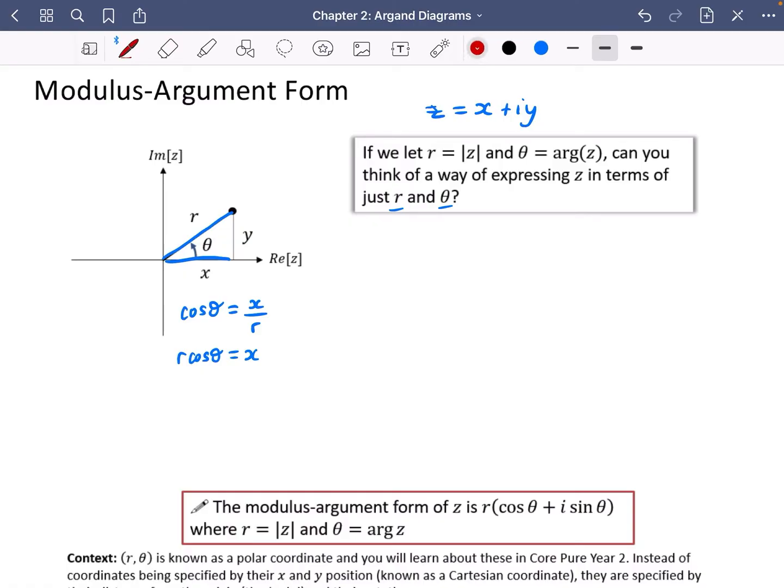I'm going to do a similar thing in red, but just using r, theta, and y from this right-angled triangle. Since x was to do with cos theta, y is going to be to do with sine theta. So sine theta is the opposite, which is y divided by the hypotenuse, which is r. So r sine theta is equal to y.